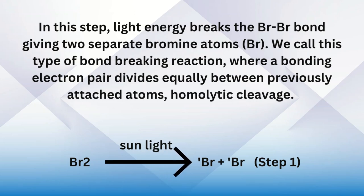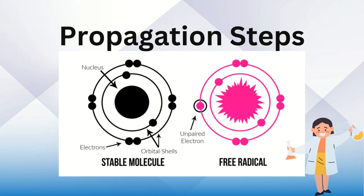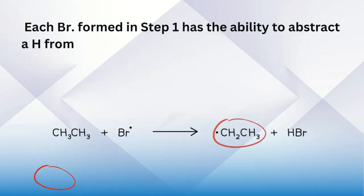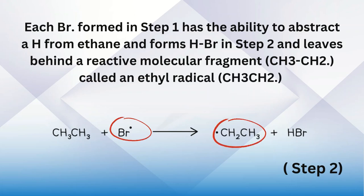Steps number two and three are propagation steps. In step two, each bromine radical formed in step one has the ability to abstract a hydrogen from ethane and forms HBr, called hydrogen bromide, and leaves behind a reactive molecular fragment CH₃CH₂ radical, called an ethyl radical.